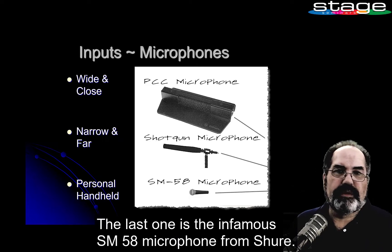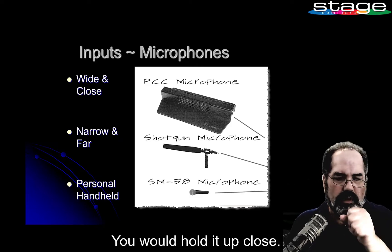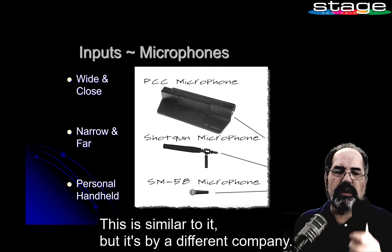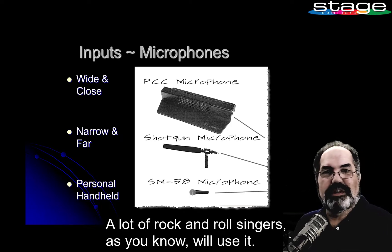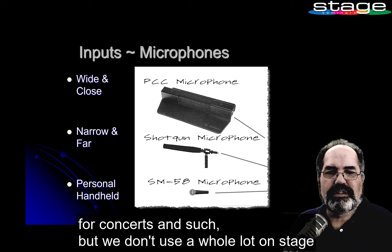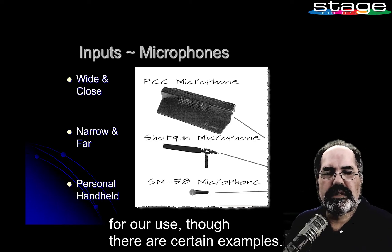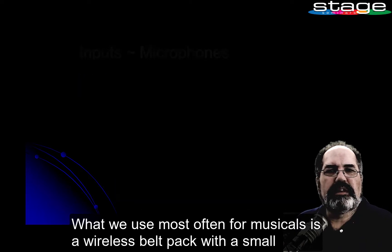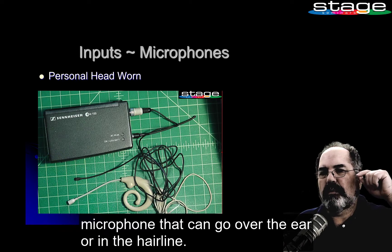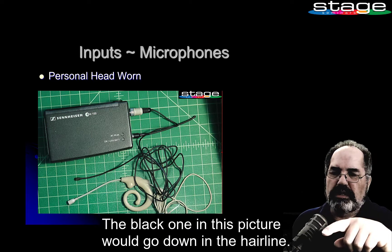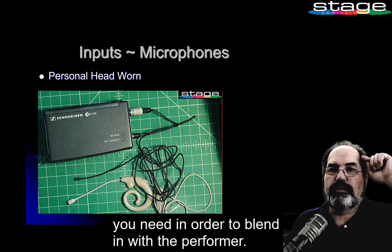The infamous SM58 microphone from Shure is a personal handheld mic — you hold it up close. A lot of rock and roll singers use it; it's on all the shows for concerts, but we don't use it a whole lot on stage for theater. What we use most often for musicals is a wireless belt pack with a small microphone that can go over the ear or in the hairline. The black one in the picture would go down in the hairline, and you can get these in whatever color you need to blend in with a performer.